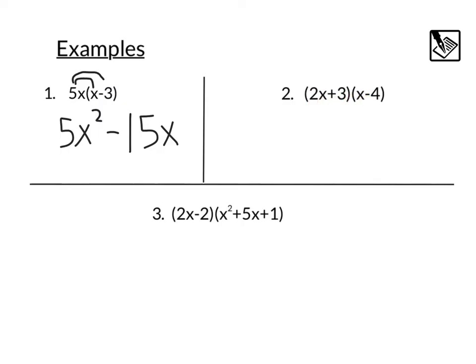2x plus 3 times x minus 4. In this case, the 2x is going to multiply to the x, giving us 2x squared, and the negative 4, which would be a minus 8x.